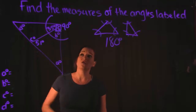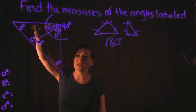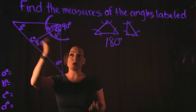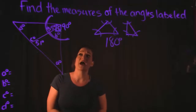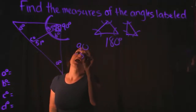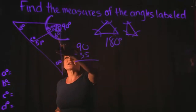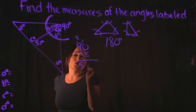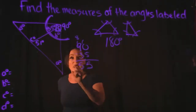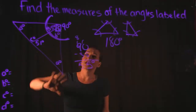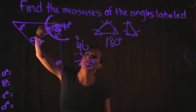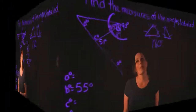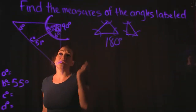Thankfully we know one of the two angles making up that right angle — the 35-degree angle. So all we have to do is take 90 and subtract 35 from it to get angle B. That tells us angle B is 55 degrees, because the whole angle is 90 and this piece is 35, so the other piece has to be 55.